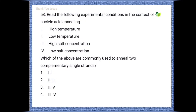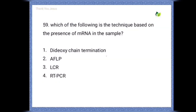In the context of nucleic acid annealing — conditions given are high temperature, low temperature, high salt concentration, and low salt concentration. Which of these are commonly used to anneal two complementary single strands? The correct option is two and four: low temperature and high salt concentration should be maintained.